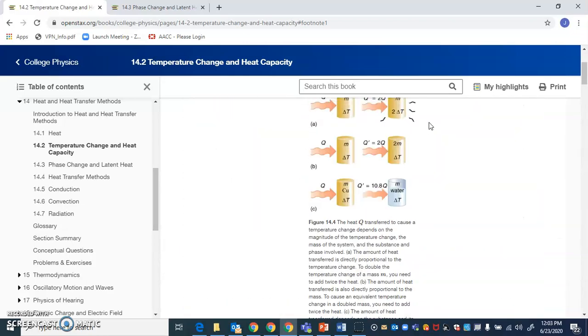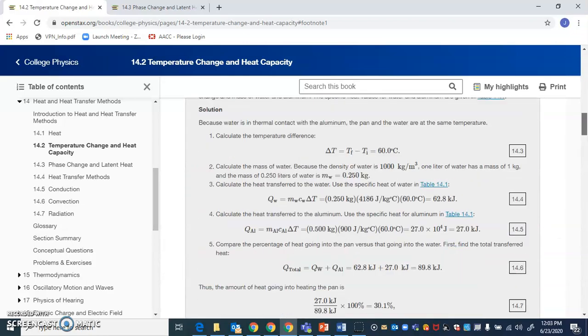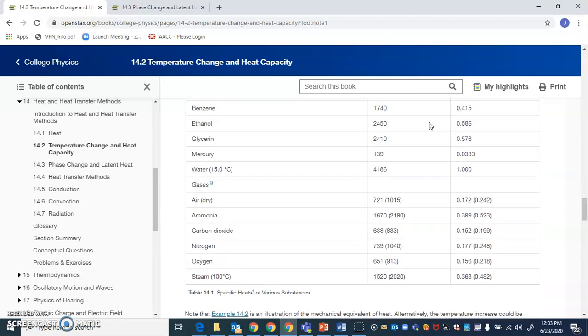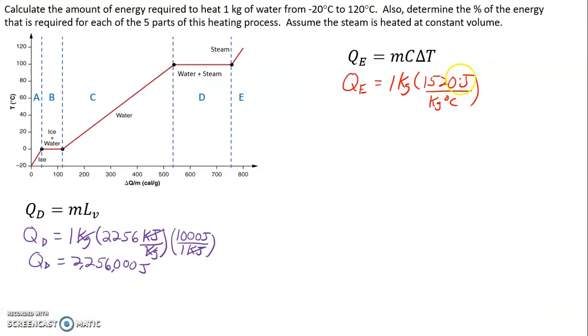That value is 1520 joules per kilogram per degree C. Final temperature for region E is 120 degrees, initial temperature for region E is 100 degrees Celsius. Multiply this together: 1520 times 20 we get 30,400.